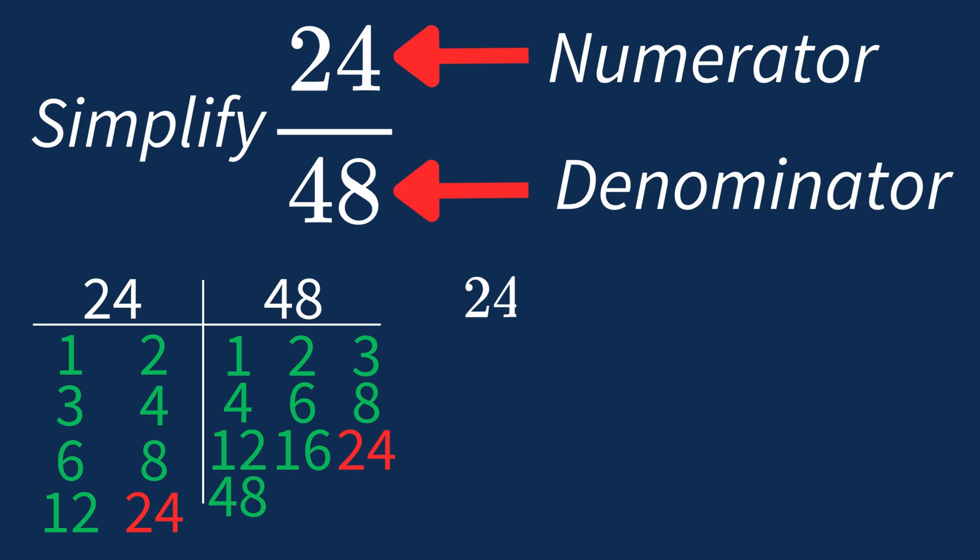Dividing the numerator 24 by 24 gives us 1. Dividing the denominator 48 by 24 gives us 2. So after dividing, the simplified fraction is 1 over 2.